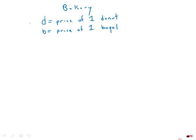I'm going to use D as the price of a donut and B as the price of a bagel. So five donuts plus three bagels, that's exactly what the prompt is looking for.